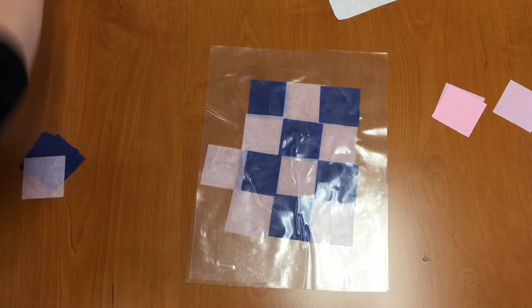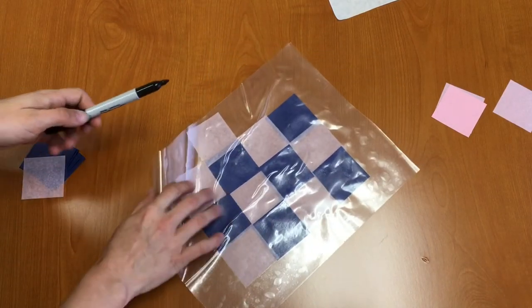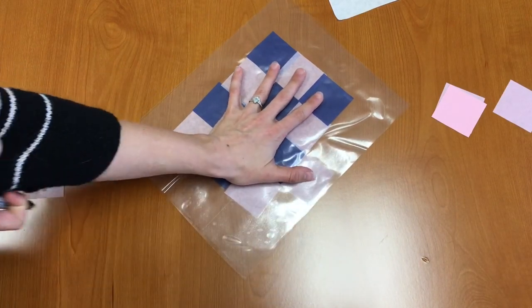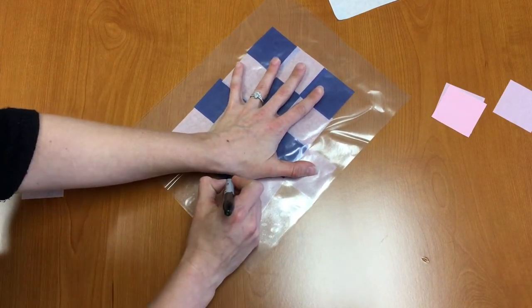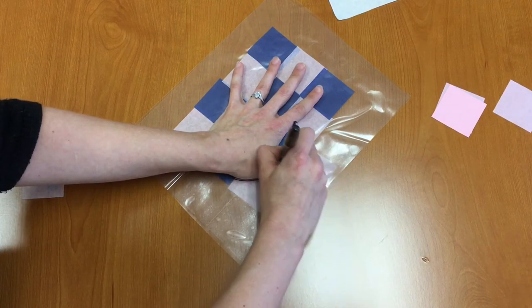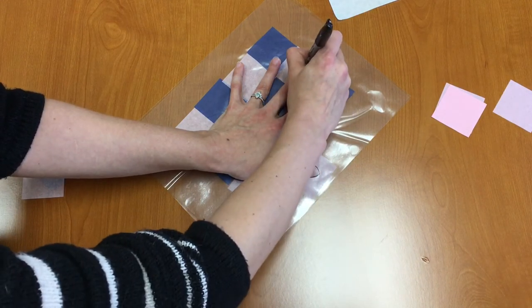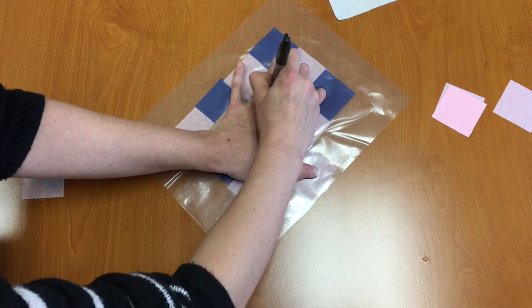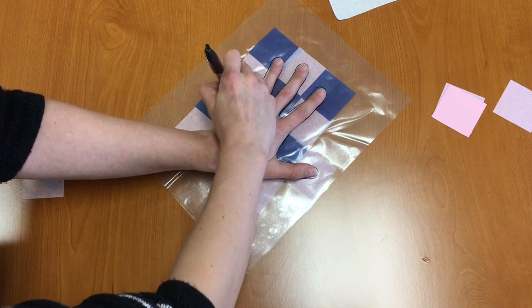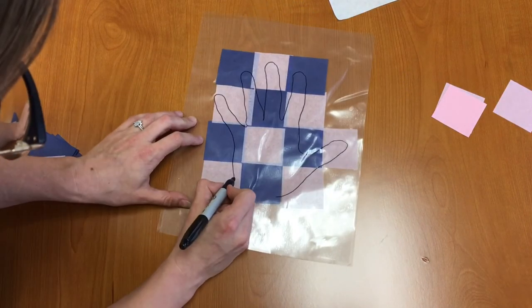Next what you want to do is take a marker and you're going to trace your hand on the contact paper. So I'm just going to trace my hand going all the way around and then I'm going to connect the bottom.